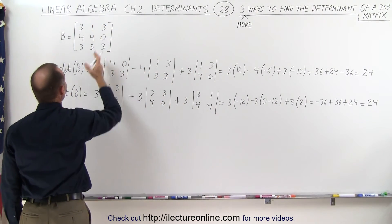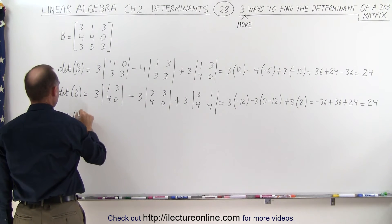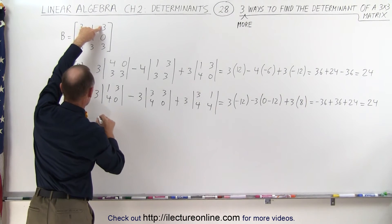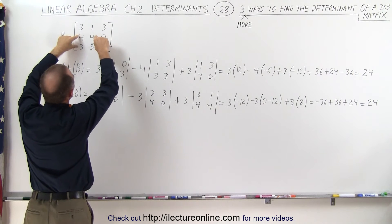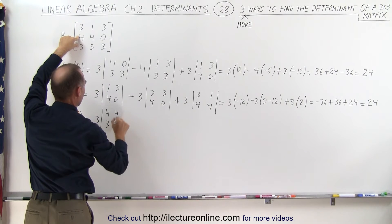Now we're going to take the right column and do it again. The determinant of B is equal to, starting with this element right here, that is positive 3, and when we cross out this row and this column, we end up with those four elements. So we get 4, 4, 3, and 3.